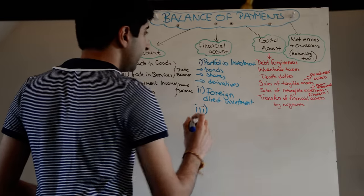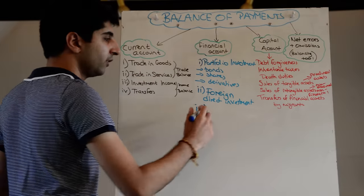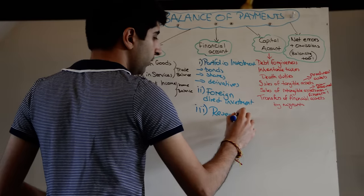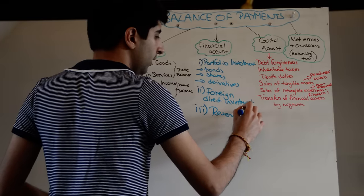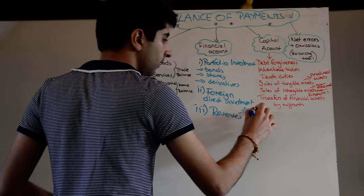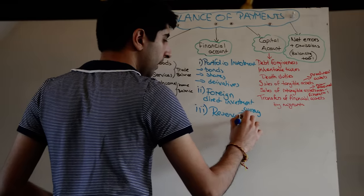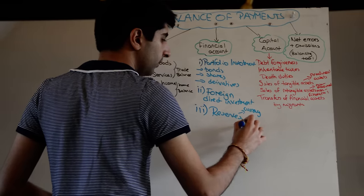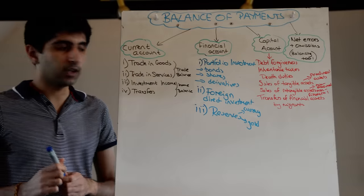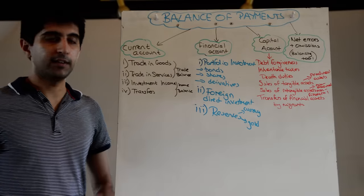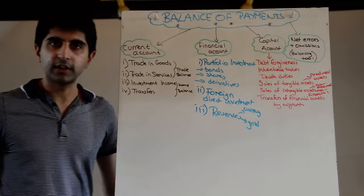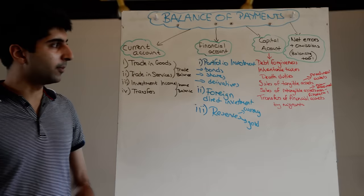The third thing measured in the financial account is reserves — held either in currency or in gold. Any changes in reserves, positive or negative, will be recorded in the financial account of the balance of payments.